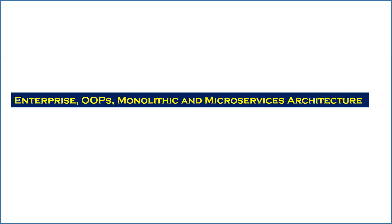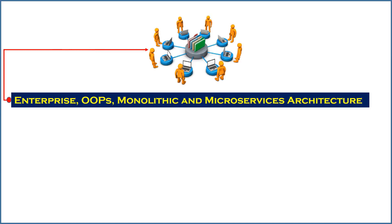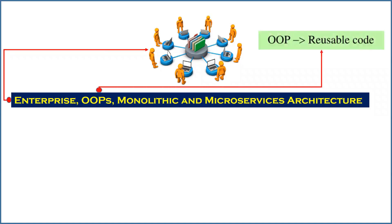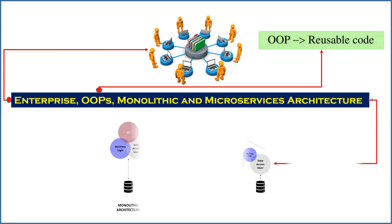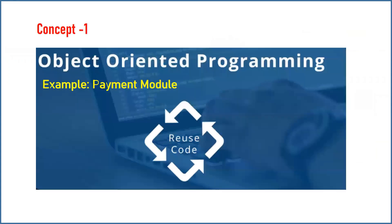Before we go into the discussion of what exactly SOA is, there are three important concepts you have to be clear on. The first is the enterprise, the second is object-oriented programming, and the third is monolithic and microservices architecture. These are very common terms which get implemented in the SOA suite.